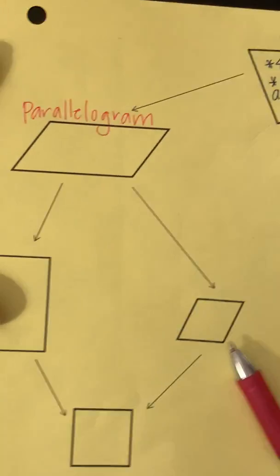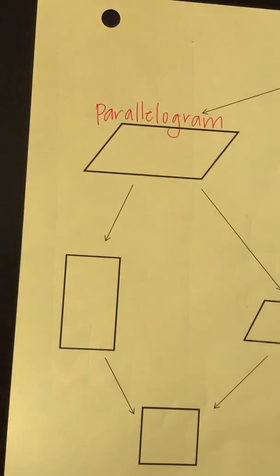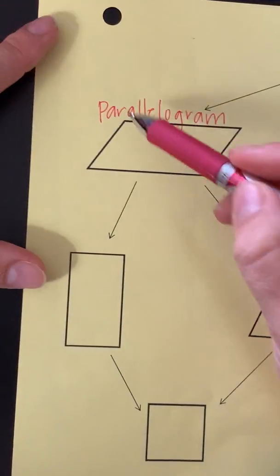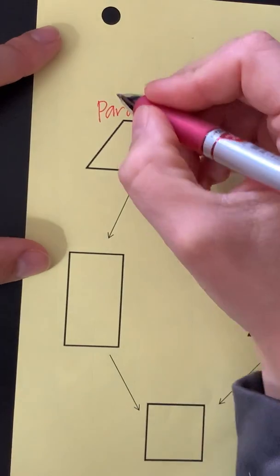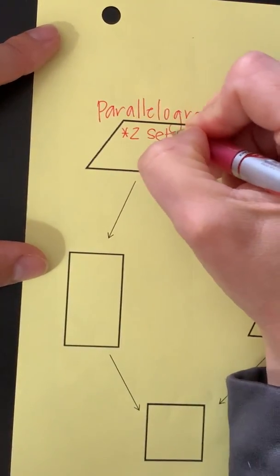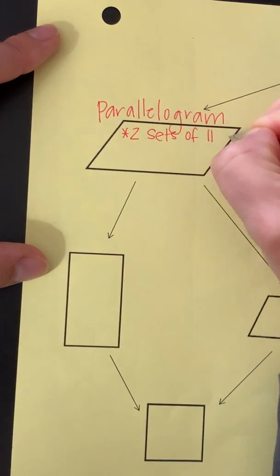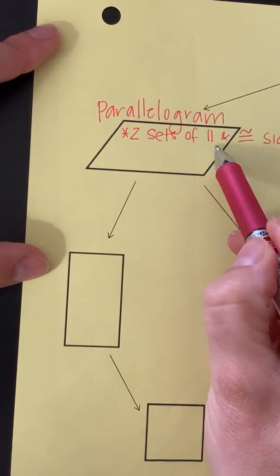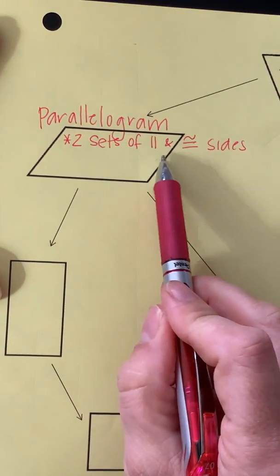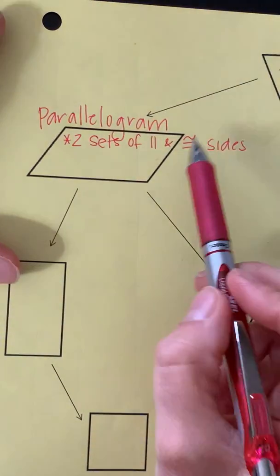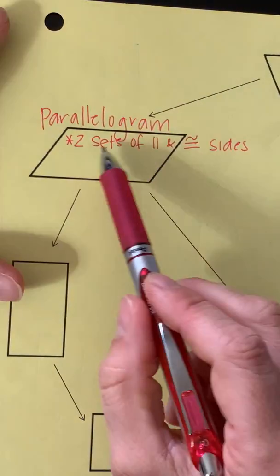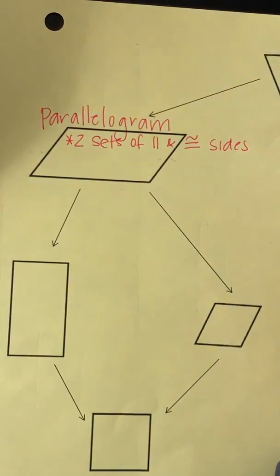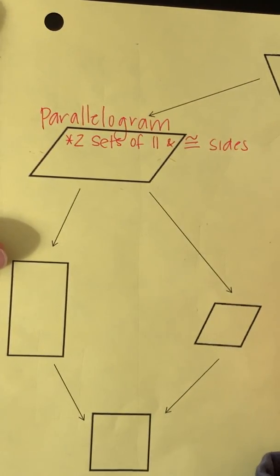Let me zoom in a little bit so you can see better as I write this. In a parallelogram — these are things you hopefully already know — there are four properties. First: two sets of parallel and also congruent sides. So the opposite sides are both parallel and congruent. If you don't remember what those symbols mean, write down the words instead, but I'm trying to keep it brief. We took these notes before we left school in March.